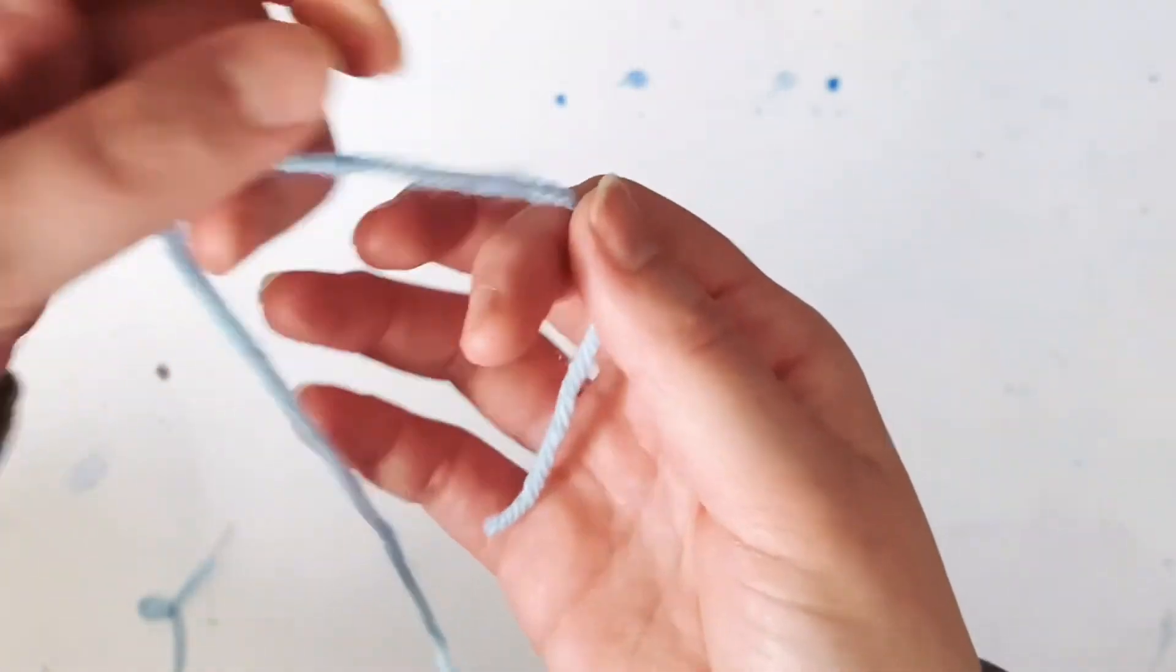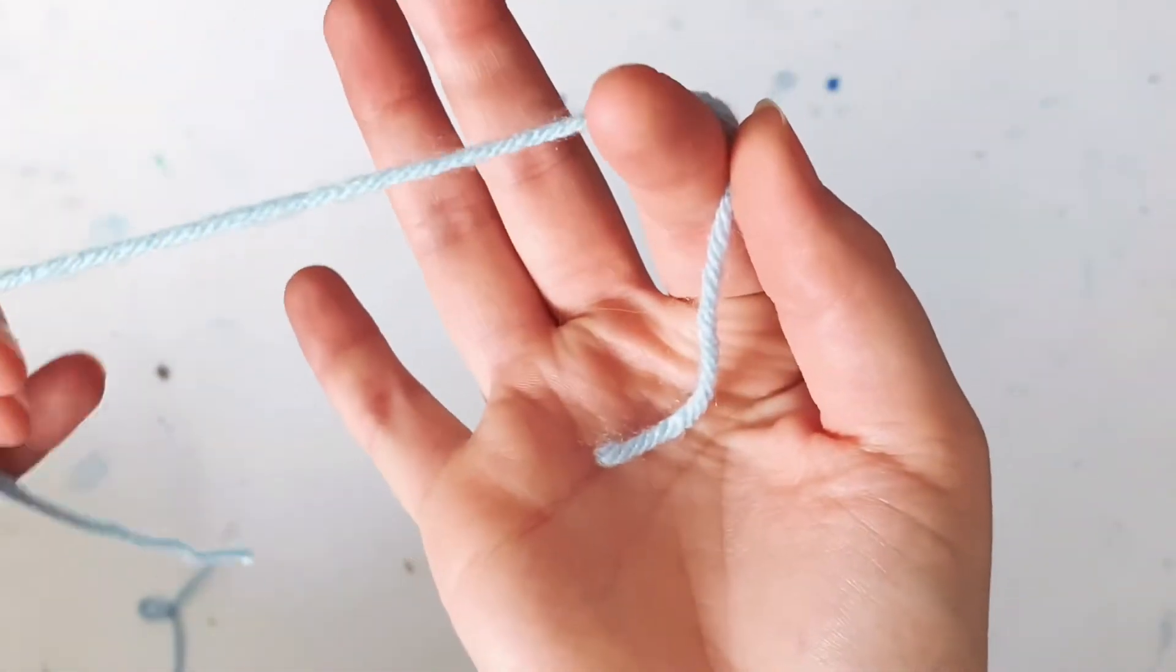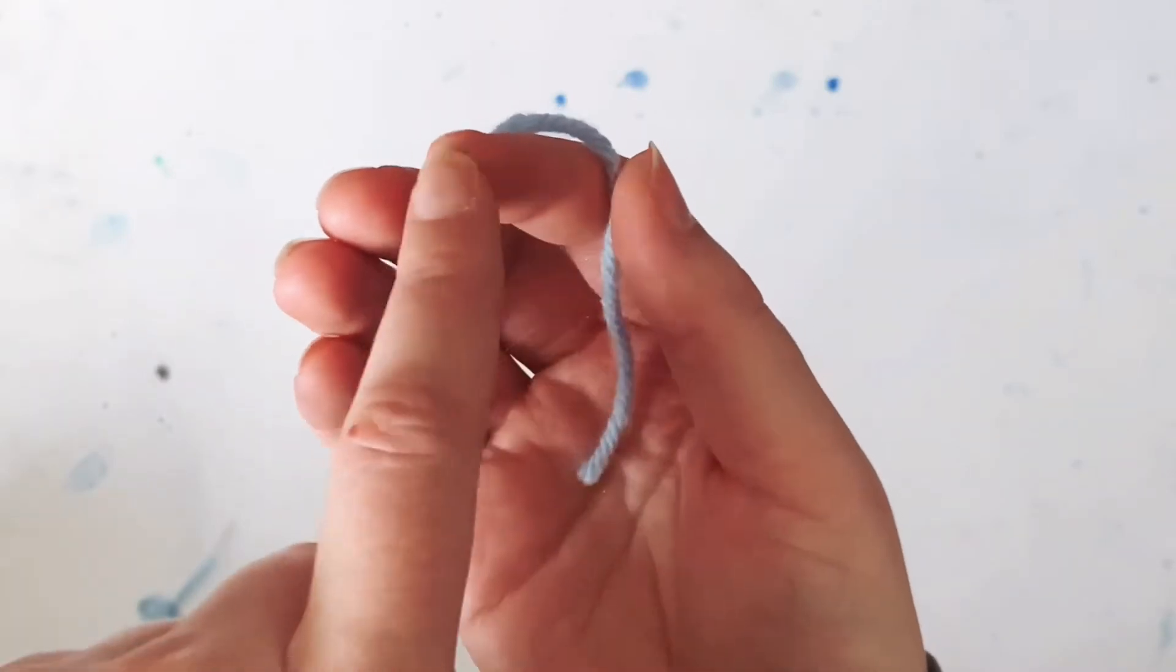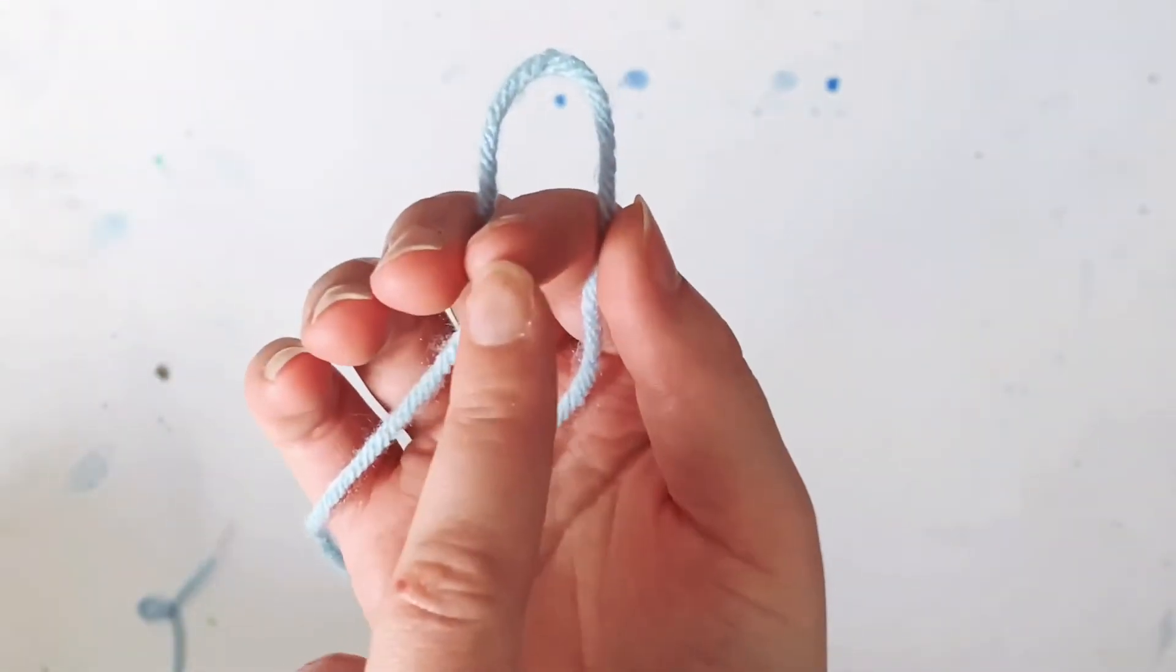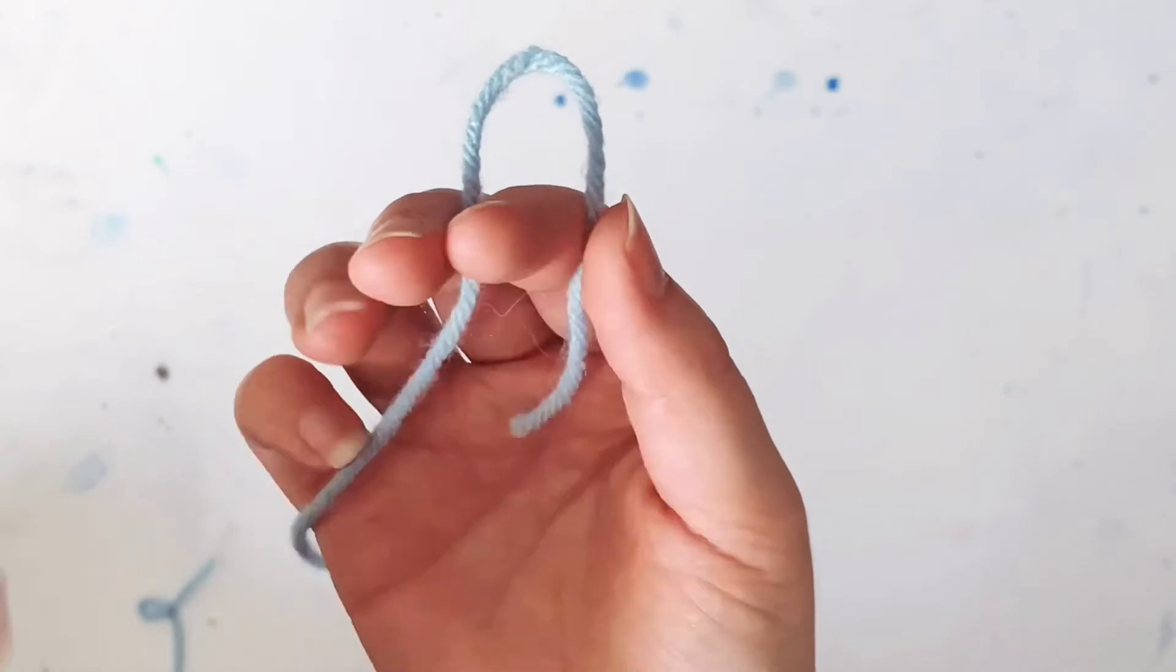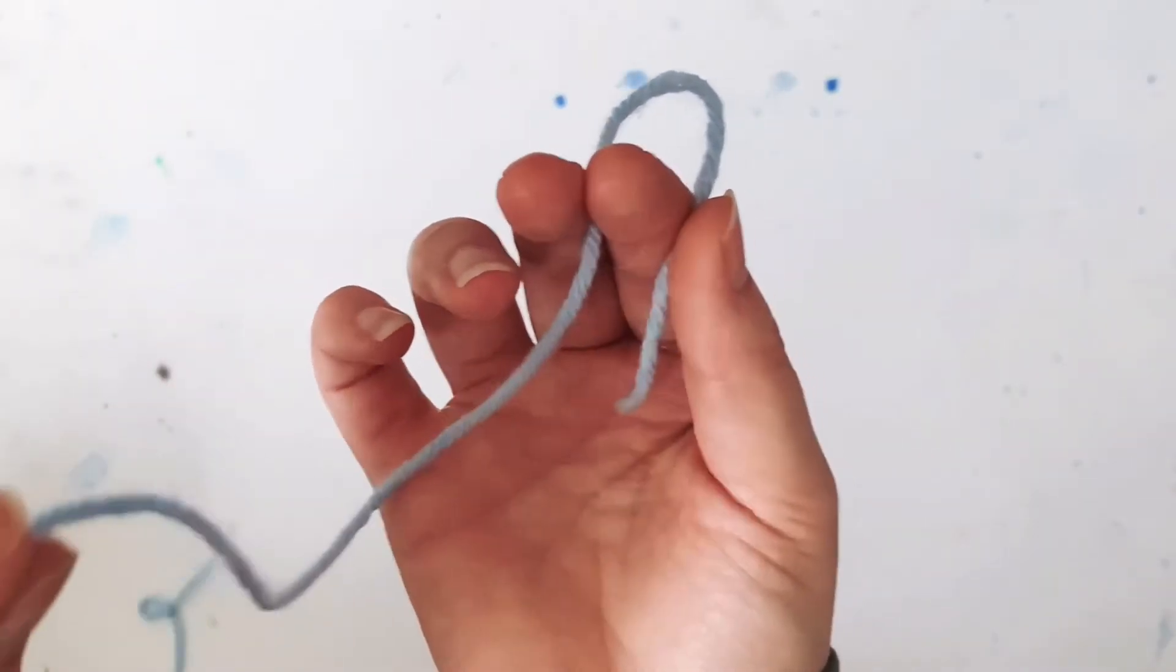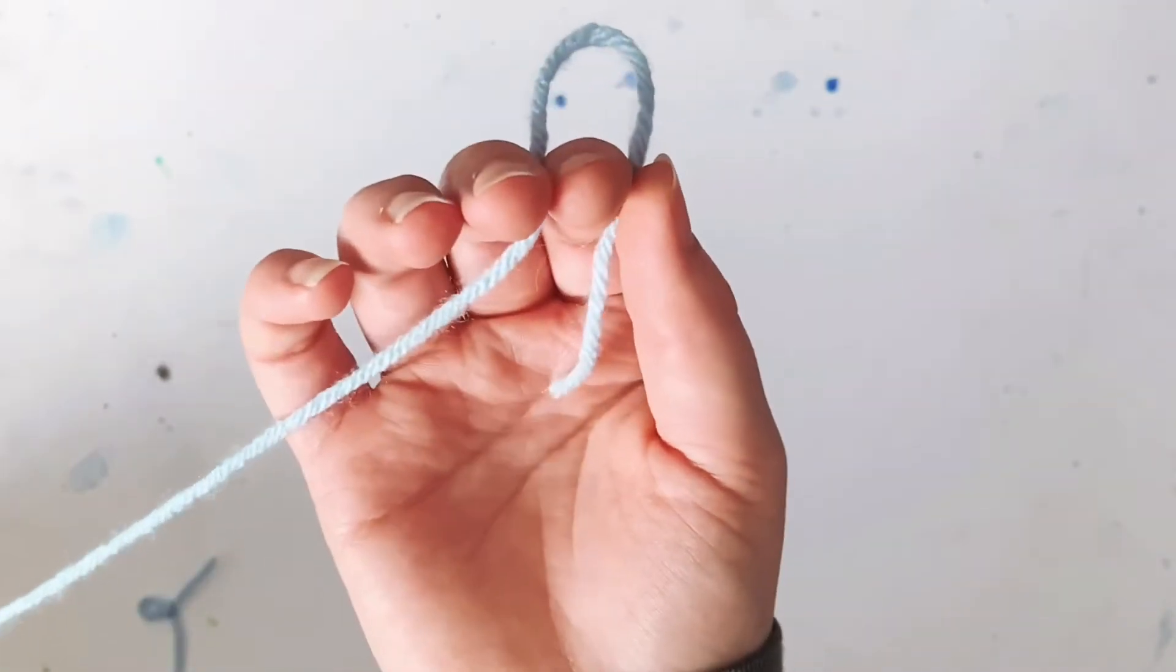The way I like to start is I take the tail end of my yarn and pinch it with my thumb and forefinger. Then with my forefinger and middle finger, I'm going to hold the string. This is the long end that my skein would be connected to.